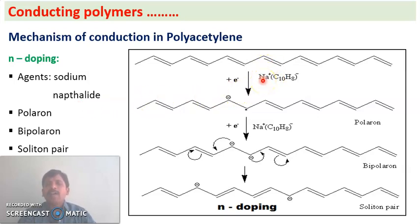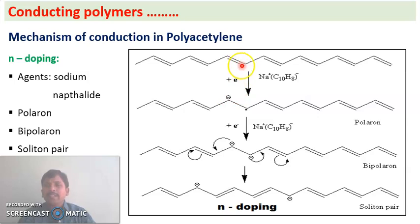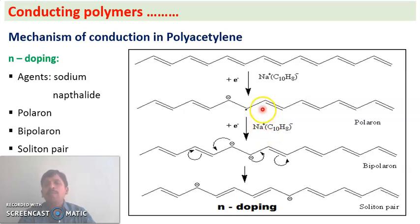When polyacetylene is treated with sodium naphthalide, electrons are added to it. In the first step, one electron is added to a carbon of polyacetylene: one carbon gets a negative charge and the other gets a radical, forming a radical anion. This radical anion is called a polaron. In the second step, the polaron is treated with one more molecule of sodium naphthalide, and one more electron is added, giving two negative charges — this is called a bipolaron.